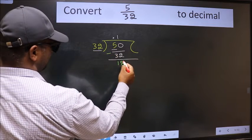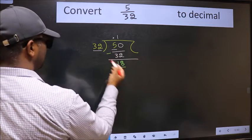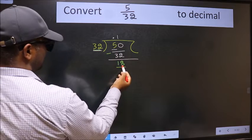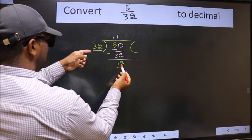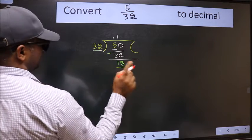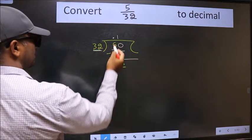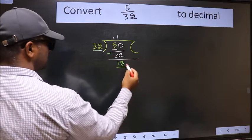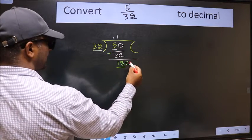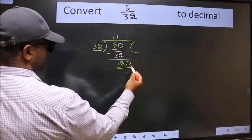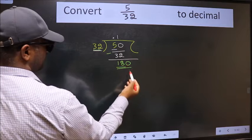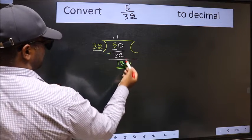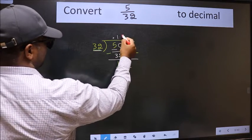We get 18. Now we have 18 and 32. Since 18 is smaller than 32 and we already have the decimal, we directly take a 0, making 180. A number close to 180 in the 32 times table is 32 × 5 = 160.